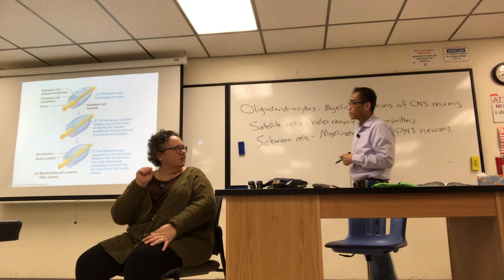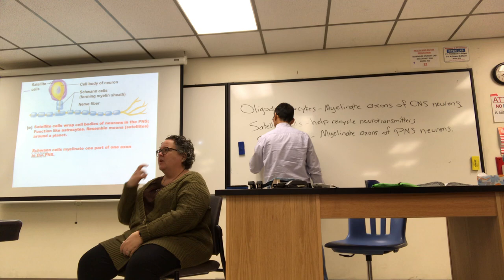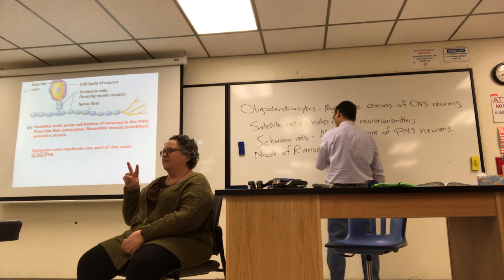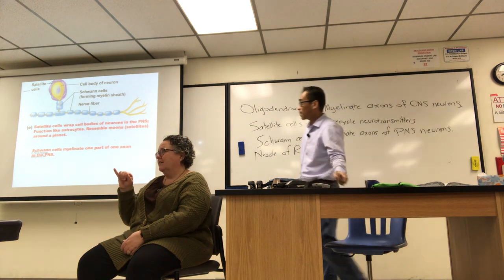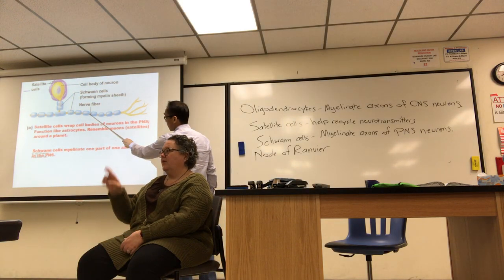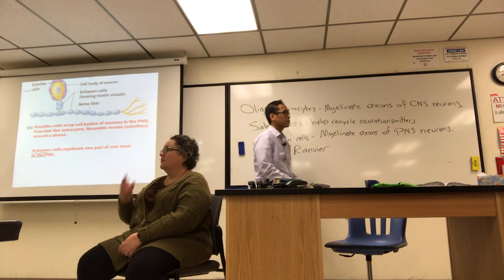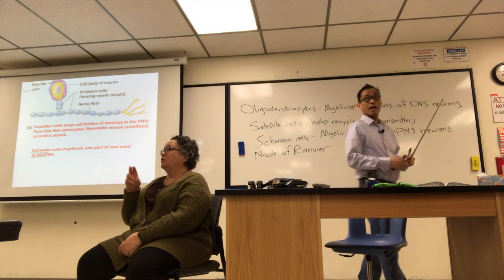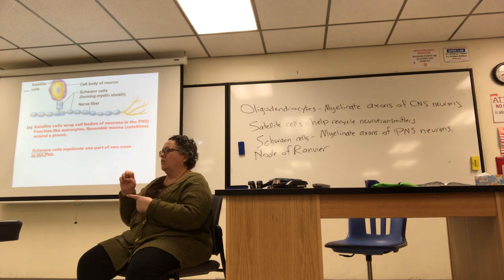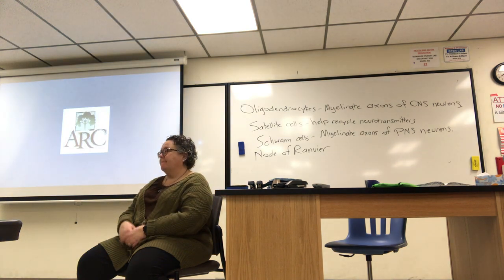The nodes of Ranvier are the exposed gaps where you can see the nerve fiber. You force the signal to jump from node to node — that's saltatory conduction and it speeds up the nerve impulse signal. Cell membrane is a phospholipid, it's very fatty, so current cannot flow across the membrane through those many layers. That's it for these slides.